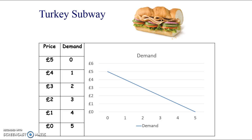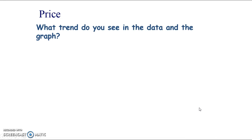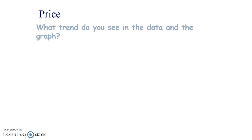If we put that into a diagram with price on the vertical axis and quantity demanded on the horizontal axis, the relationship is clear: when there's a high price, there's a low quantity demanded, and when there's a low price, there's a high quantity demanded. This downward sloping demand curve represents what we call an inverse relationship.